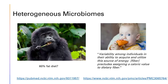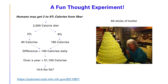I love this quote: 'Variability among individuals and their ability to acquire and utilize this source of energy' — that being fiber — 'precludes assigning a caloric value to dietary fiber.' Basically, we can't say how many calories fiber is because people are too distinct in how many calories they get from it. For some reason, nutrition labels have decided fiber has zero calories, which doesn't make much sense. This paper suggested humans get between 2 and 9% of their calories from fiber, assuming a standard intake of about 35 grams per day. That 7% span, scaled to a 2,000-calorie diet, is 140 calories per day.